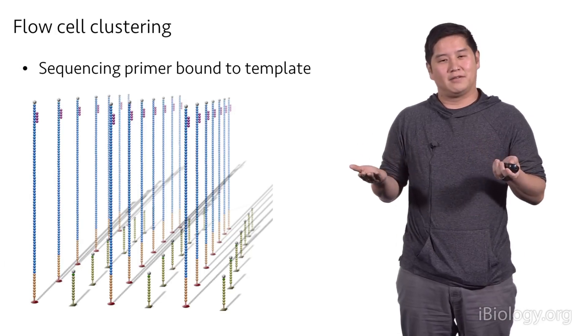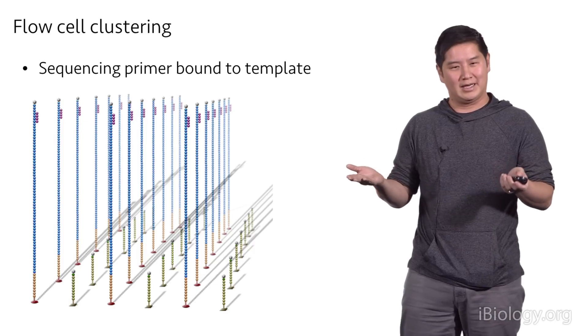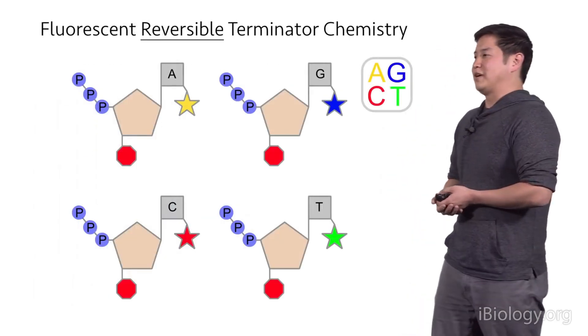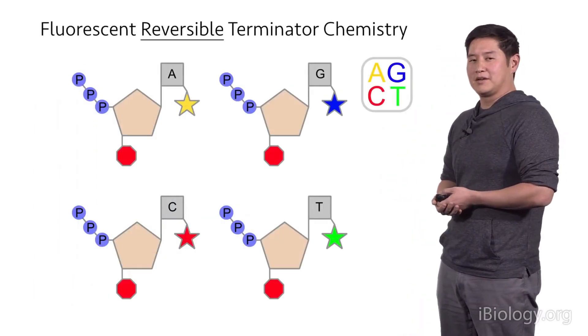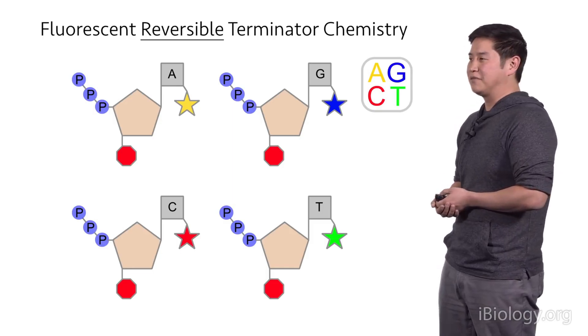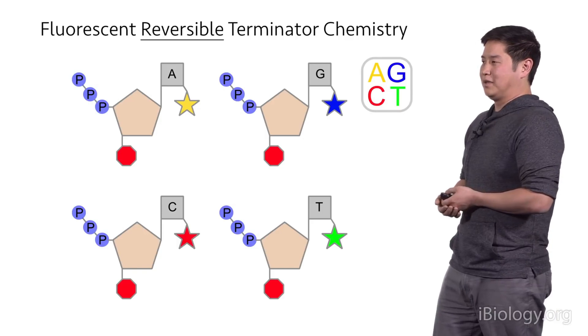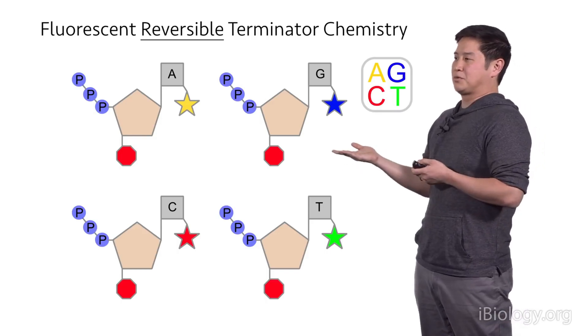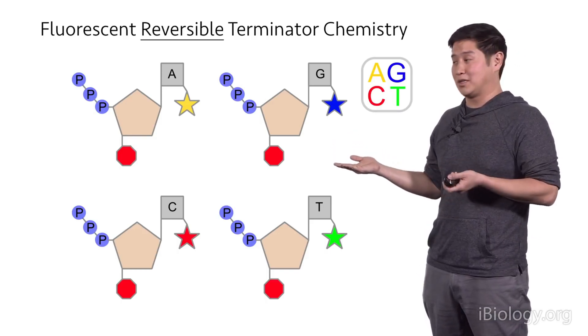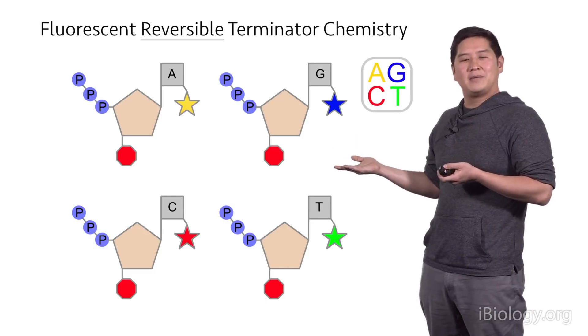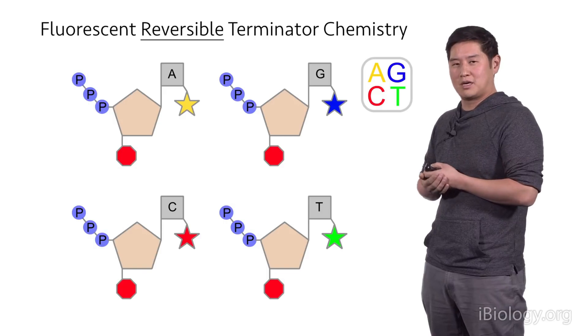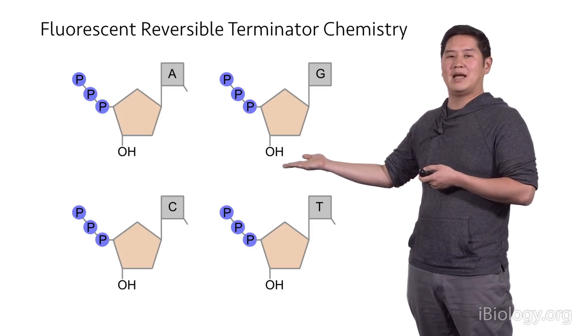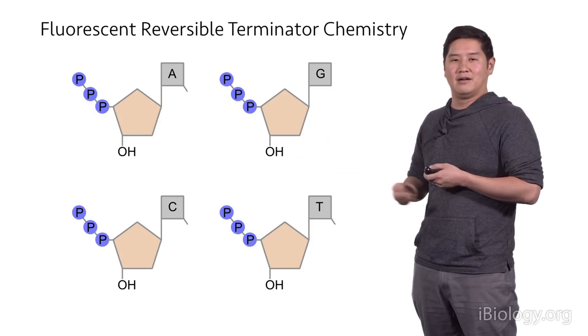And so remember that when we put the flow cell onto the sequencer, this is what it looks like. We have a lot of clusters that each have a sequencing primer bound to them. And the chemistry for sequencing is very similar to the Sanger sequencing terminators that were used. But the one difference is that these are reversible. And so they're reversible in two ways. So first, these can get incorporated into the clusters by DNA polymerase. And those clusters will light up in four different colors depending on which base gets incorporated. A picture is taken. And after that picture is taken, we can actually remove these terminators and the fluorescent groups with some chemicals. And what results is we regenerate the three prime hydroxyl group. So now that cluster can have another round of bases added to it.